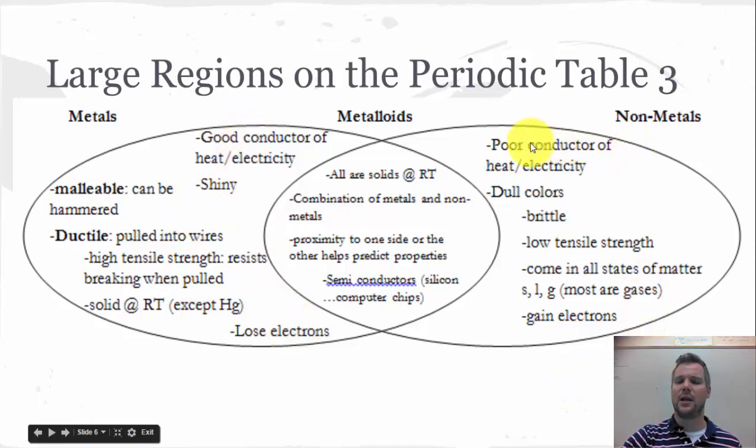Non-metals, on the other hand, are the opposite of metals. So they're poor conductors. They're not shiny. They're dull. They're brittle. They can't be hammered or can't be drawn into wires. And most of these will want to gain electrons. So mostly lose electrons, mostly gain electrons.